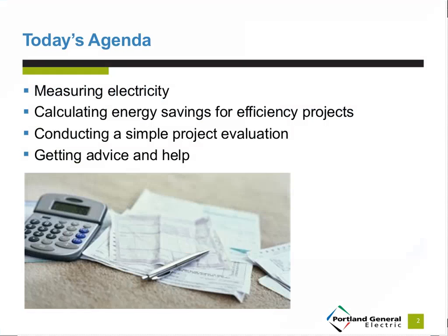Today we have a simplified agenda that will take about 30 to 40 minutes to review. In measuring electricity, we will review the basic formulas needed to measure it at your place of business. In calculating energy savings, we will expand the formulas to include price of electricity to calculate the cost of usage for common business equipment that have different efficiency ratings. With these basic formulas, we can perform a project evaluation for an improvement project that can save energy and money for your business organization. And lastly, we will provide contact information for getting advice and help with projects to make sure you get all the incentives and support it takes to get projects approved and completed.